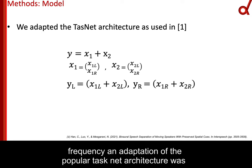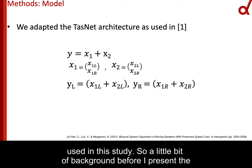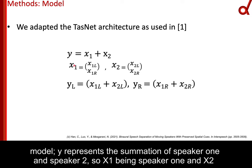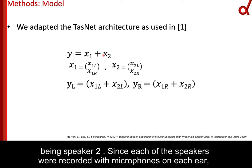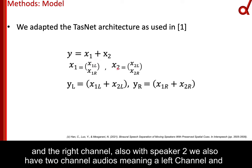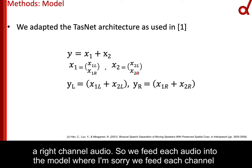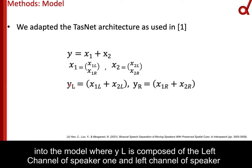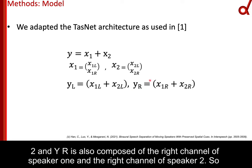An adaptation of the popular TasNet architecture was used in this study. Y represents the summation of speaker 1 (X1) and speaker 2 (X2). Since each speaker was recorded with microphones on each ear, we end up with bilateral two-channel audio — meaning sound X1 is composed of a left channel and a right channel, and likewise for X2. We feed each channel into the model: YL is composed of the left channel of speaker 1 and speaker 2, and YR is composed of the right channel of speaker 1 and speaker 2.